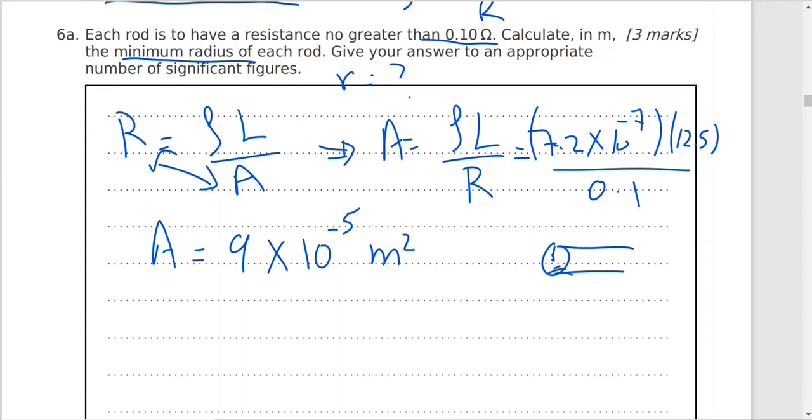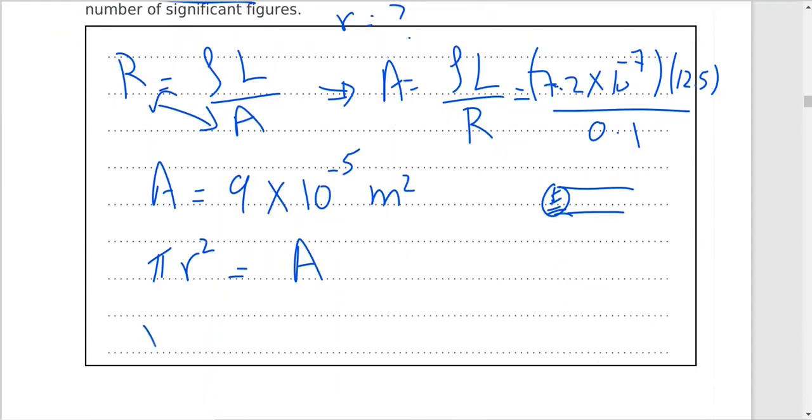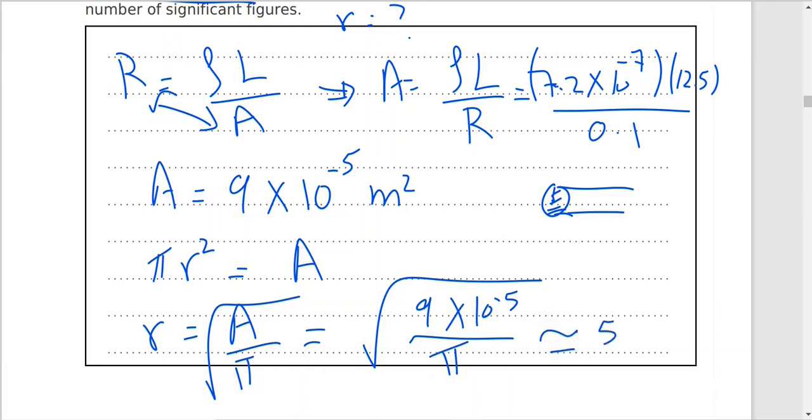I know area. If I have a rod, it's pi R square. So the area of the circle, pi R square. This is the area. I need r. So r will be area divided by pi under the square root. So this will equal area is 9 times 10 to the power negative 5 divided by pi. And this will equal 5.4 times 10 to the power negative 3 meter.